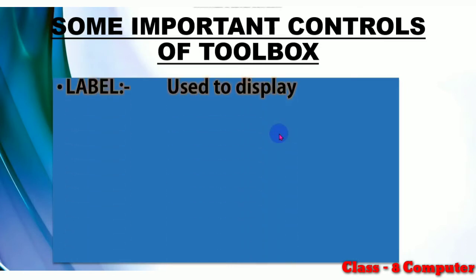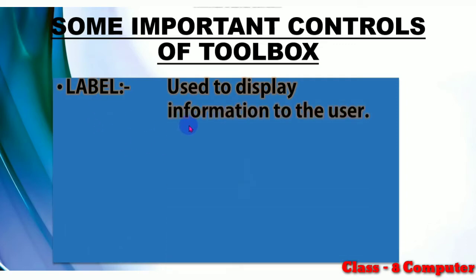There are some important controls of the toolbox which we need often. First is the Label Box control. The Label Box control is basically used to display information to the user. It acts like a heading — if you want to give a heading to your program, label something, or display information for the user, you can use the Label Box control.